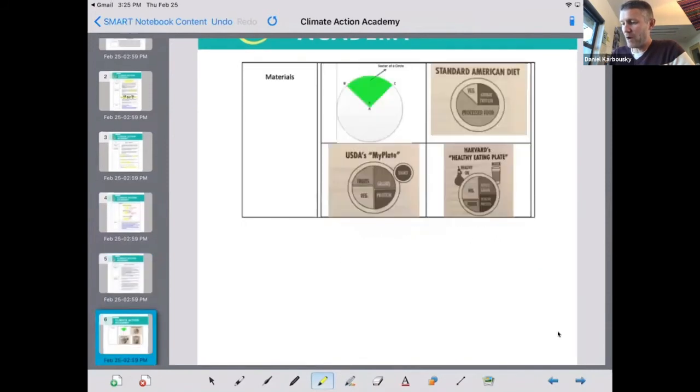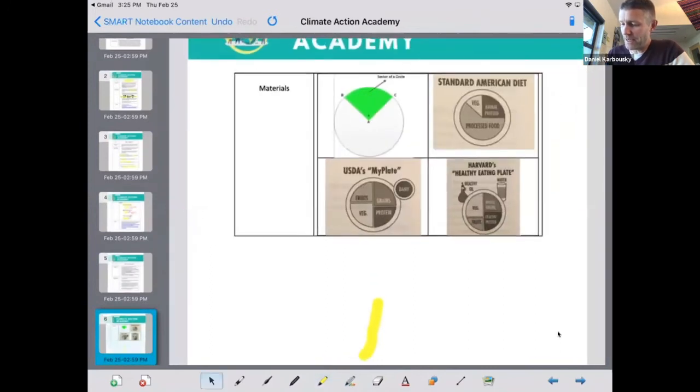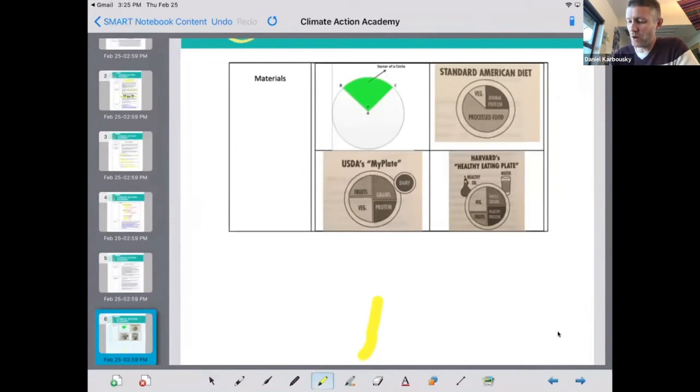A quick geometry one, I won't go into this too much. But this one is more about in geometry, you might have to, one of the topics at our school we teach is they have to find area of sectors of a circle. So it's kind of like a pizza slice of a circle. And then we talk about diets, right? Like how much of your diet is vegetables, and how much of it is processed foods and other things like that. And so basically, we're going to talk about the standard American diet versus what the USDA suggests what a standard diet is.